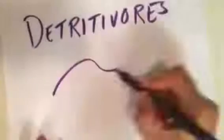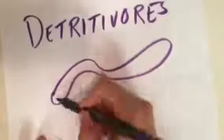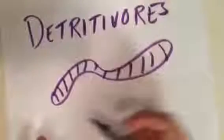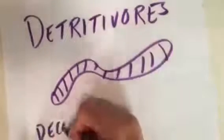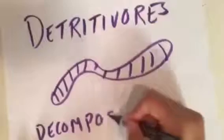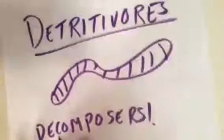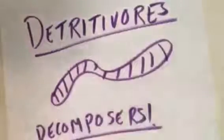Lastly, there are also detritivores, which are similar to decomposers. They eat fragments of dead matter and recycle nutrients that can be used by other organisms — they eat what's called detritus.